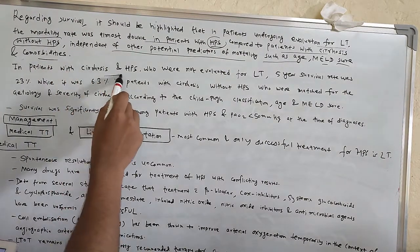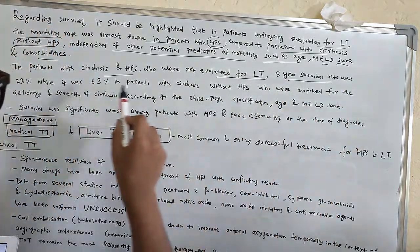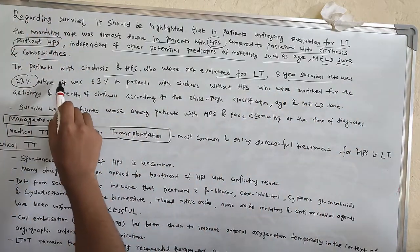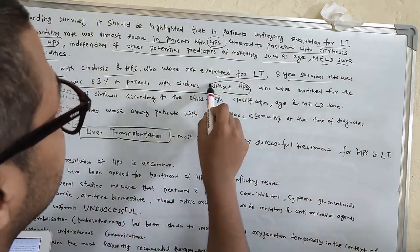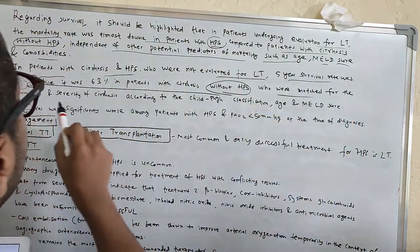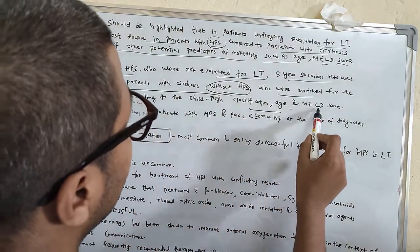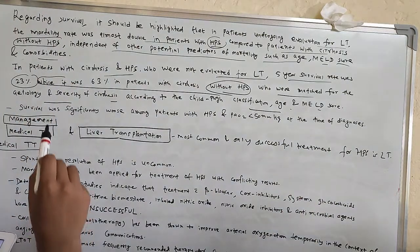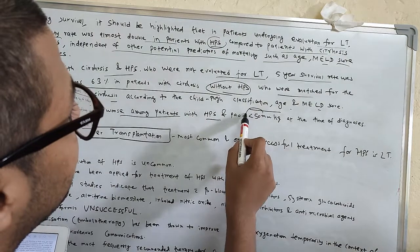In patients with cirrhosis and HPS who were not evaluated for liver transplant, 5-year survival rate was 23%, while it was 63% in patients with cirrhosis without HPS who were matched for etiology and severity of cirrhosis according to the Child-Pugh classification, age, and MELD score. Survival was significantly worse among patients with HPS and PAO2 less than 50 mmHg at the time of diagnosis.